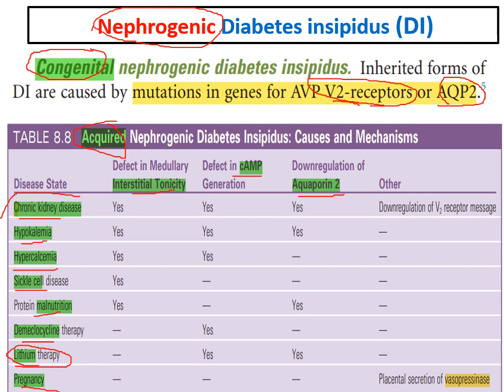In pregnancy, there is increased vasopressinase enzyme, which degrades the vasopressin hormone. Among all acquired causes, lithium therapy is the most common cause of nephrogenic diabetes insipidus.